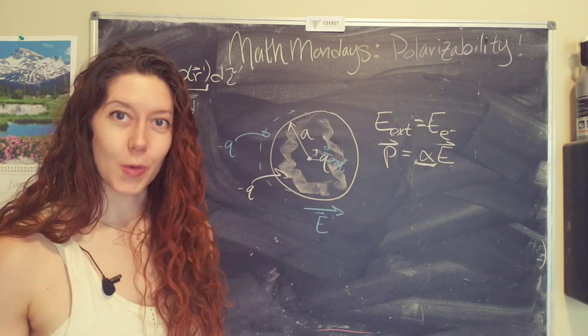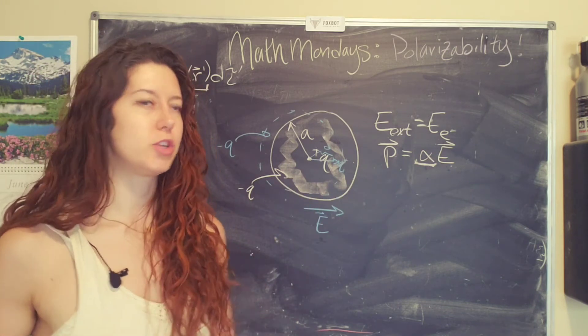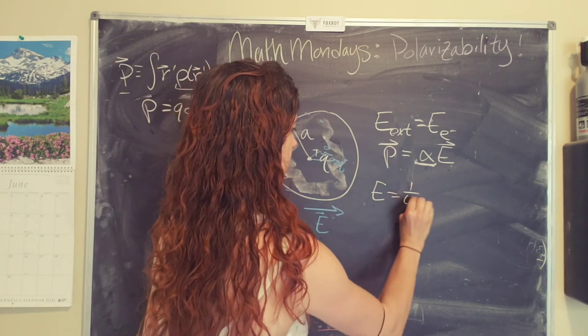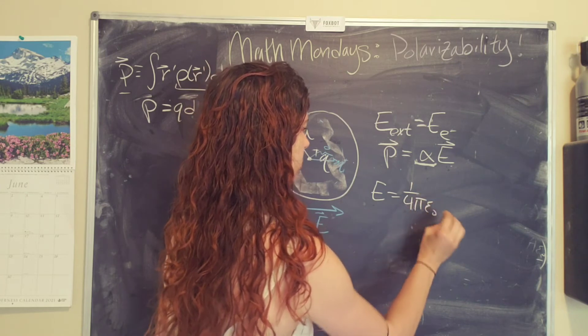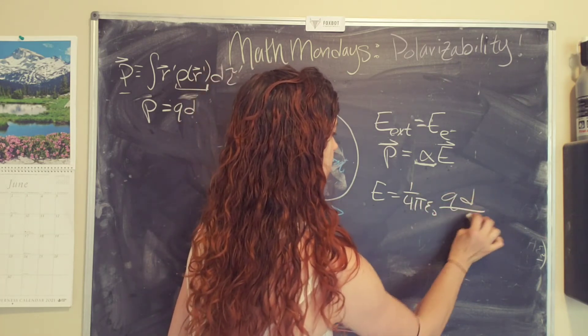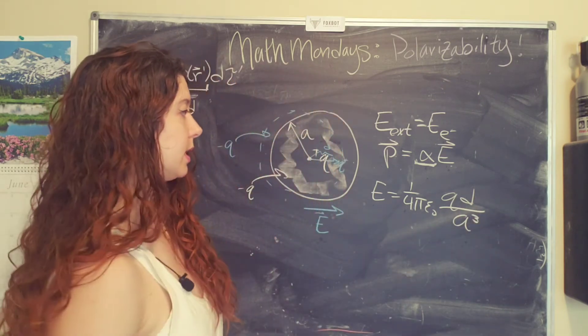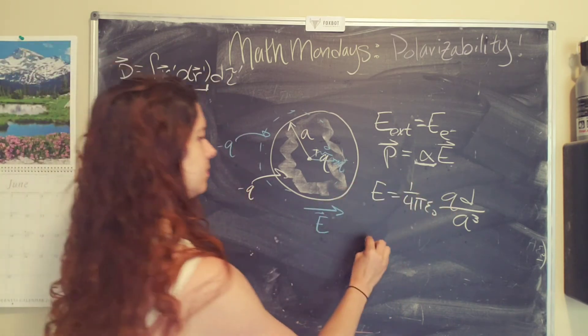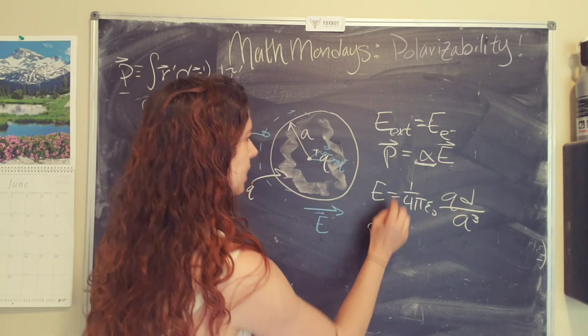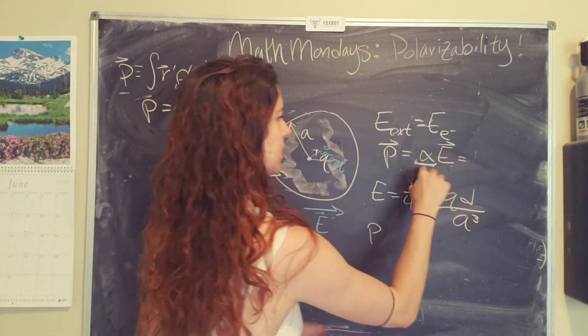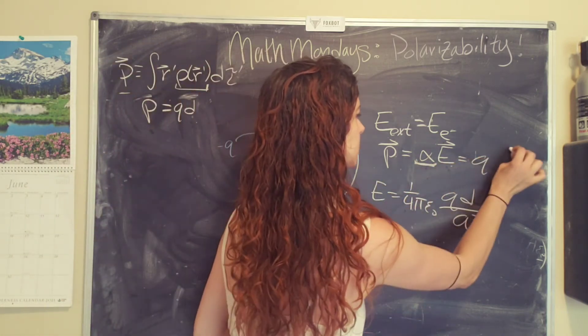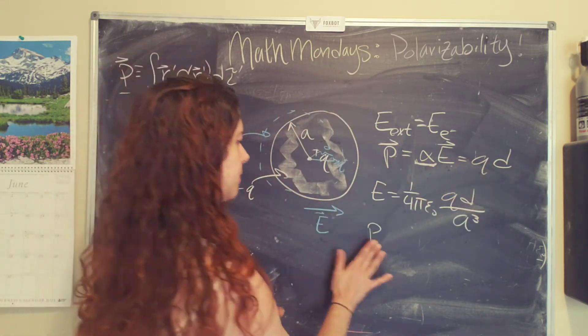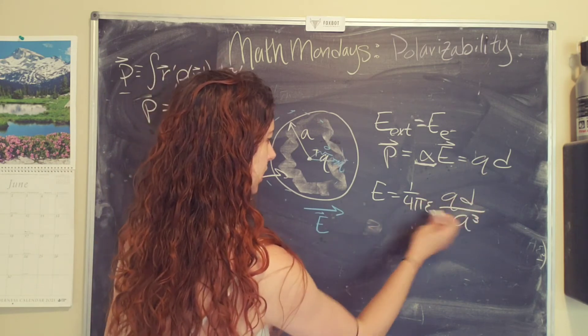We also know that the electric field of a uniformly charged sphere at a distance d is given by this equation, one over four pi epsilon naught, qd over a cubed, where a is the radius. And so we now can, okay, so now we have the dipole moment equals alpha times the electric field. It also equals q times d. So if we can replace q, we can then solve for alpha. So we solve for q with this equation.